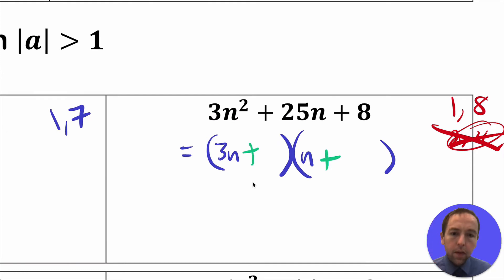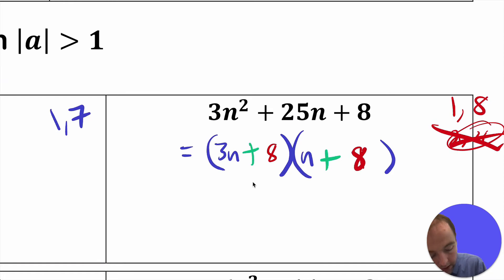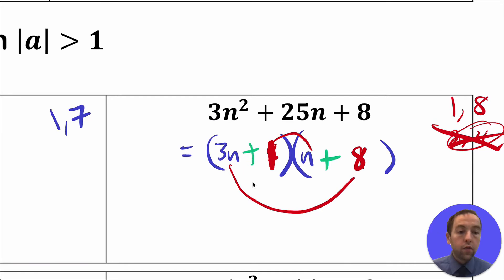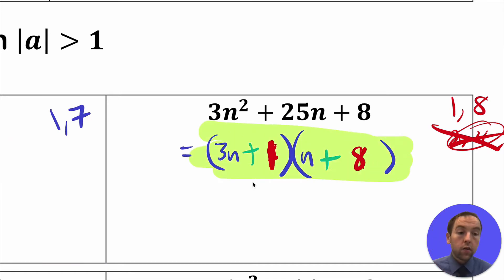So try 1 and 8 instead. Putting 1 and 8 in: you check outside and inside and get 8n + 3n = 11n. That doesn't work either. Then switch to 8 in the first binomial and 1 in the second: you get 24n + 1n, which does give 25n. So the factored form works out — the FOILing of those factors equals the original expression. After some guessing and checking, we found the factored form.